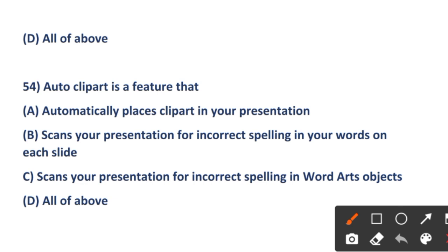The next question: Auto Clip Art is the feature that does what? Option A: automatically places clip art in your presentation. Option B: scans your presentation for incorrect spelling in words. Option C: scans your presentation for incorrect spelling in WordArt objects. Option D: all of the above. The right answer is option D — all of the above.